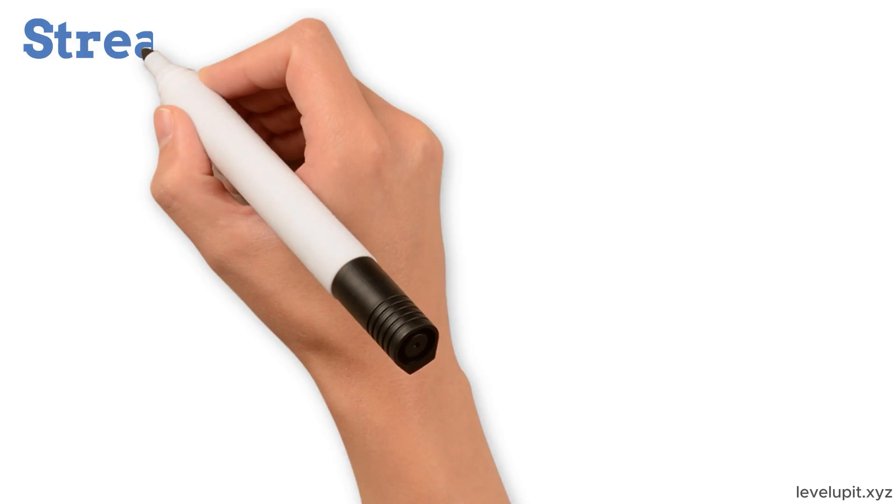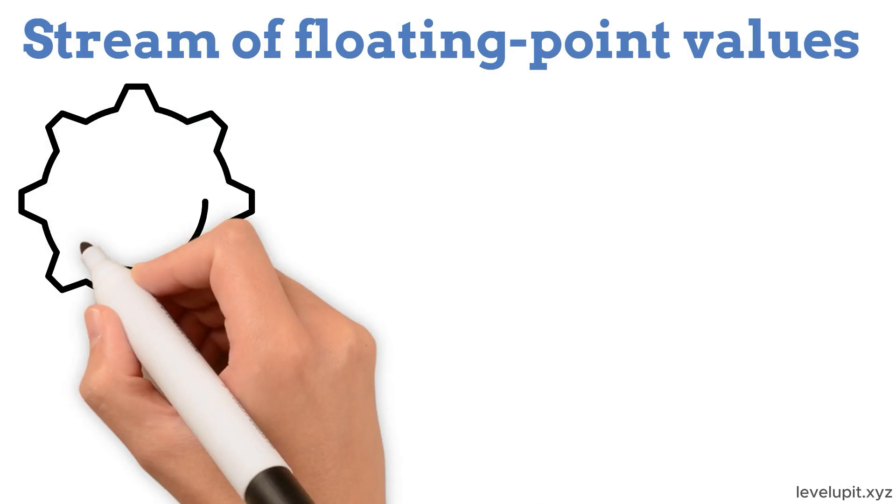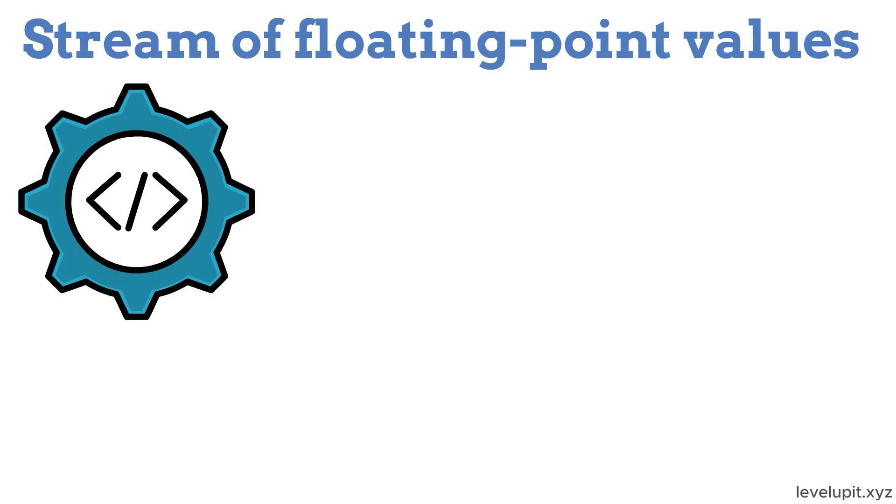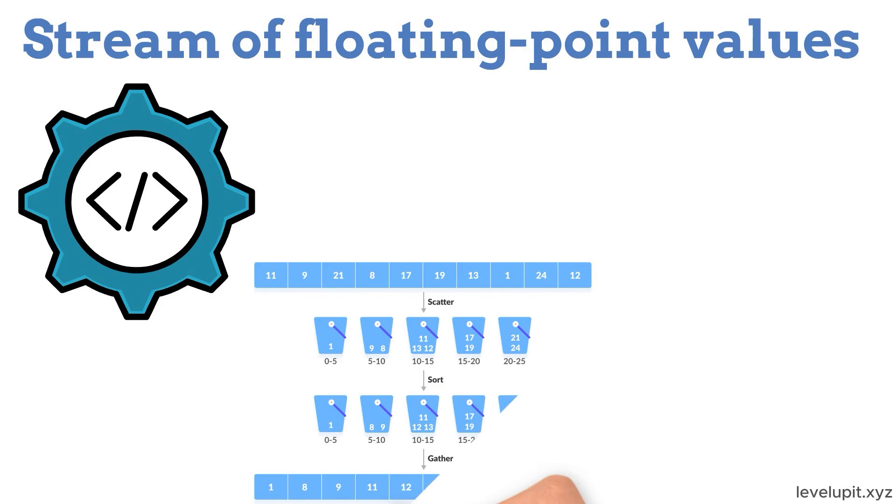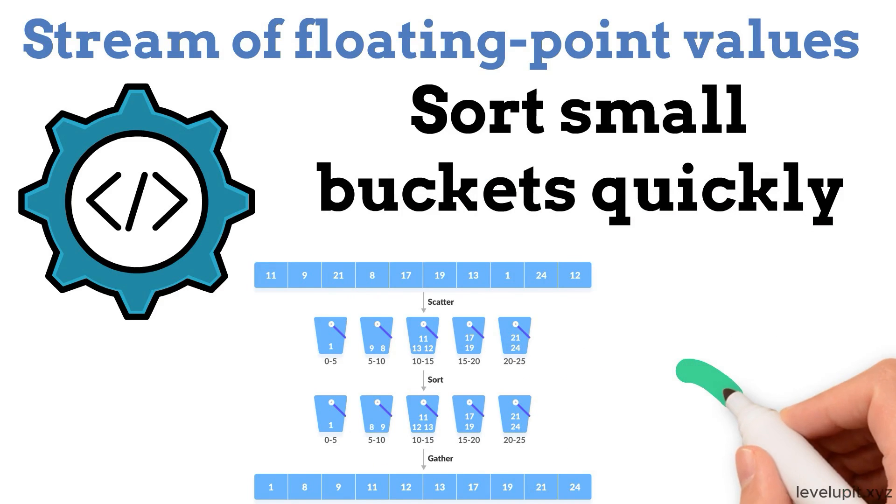When processing a stream of floating-point values between 0 and 1 with an even spread, say normalized confidences from a model, bucket sort can allocate values to a fixed set of buckets, sort small buckets quickly, and output a globally-sorted stream with little overhead.